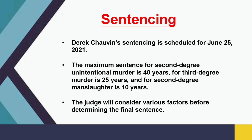Sentencing: Derek Chauvin's sentencing was scheduled for 2021. The maximum sentence for second-degree unintentional murder is 40 years, for third-degree murder is 25 years, and for second-degree manslaughter is 10 years. The judge will consider various factors before determining the final sentence.